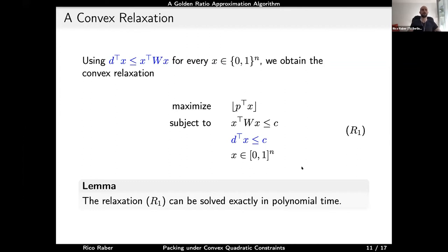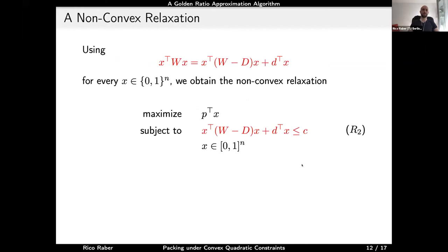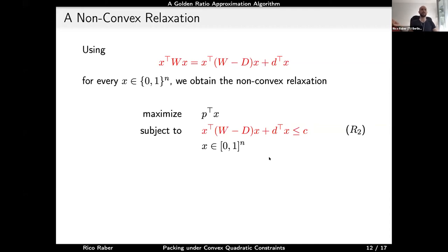Now consider the red equality: the quadratic term can also be rewritten so that when we substitute it into the original problem and relax integrality, we get a second formulation. The matrix W minus D has zeros on its diagonal, so it is no longer positive semi-definite, giving us a non-convex relaxation. It is not clear how to solve this efficiently in general. However, it has a very useful property.